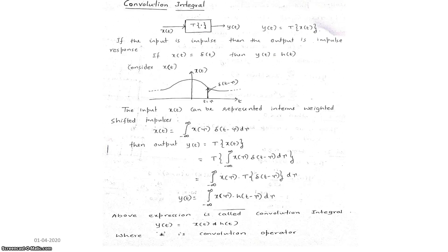Since the input is delta(t), the output is h(t), the impulse response. Similarly, if the input is delta(t minus tau), then the output will be h(t minus tau). Therefore, y(t) equals the integral from minus infinity to plus infinity of x(tau) times h(t minus tau) d tau. This expression is called the convolution integral. It is also represented as y(t) equals x(t) star h(t), where x(t) is the input signal, h(t) is the impulse response, and star is the convolution operator.